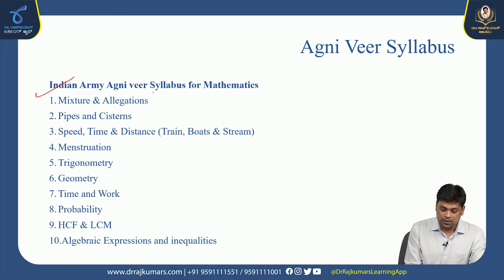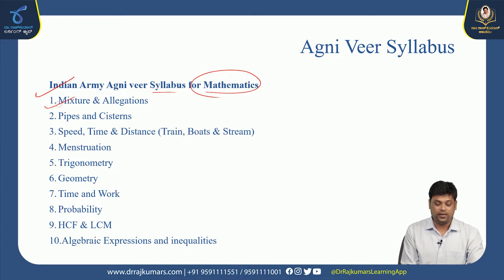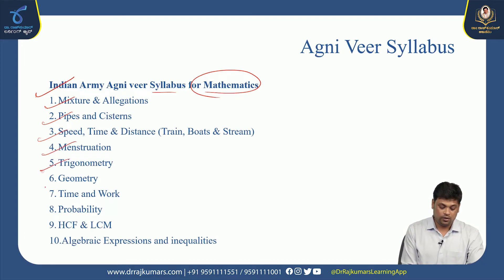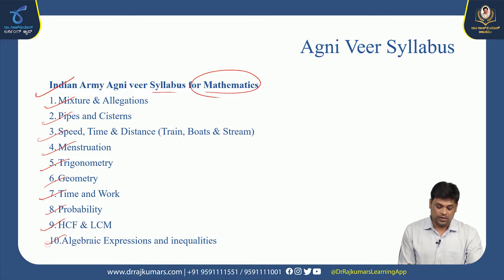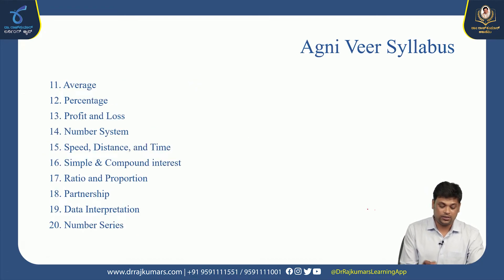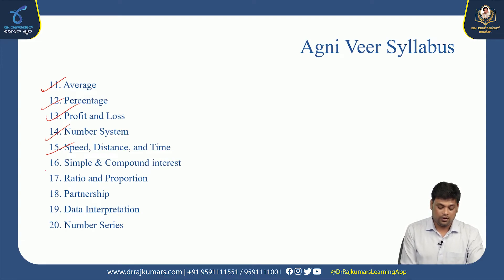Indian Army Agniveer syllabus for mathematics: mixture and allegations, pipes and cisterns, speed, time and distance, mensuration, trigonometry, geometry, time and work, probability, HCF and LCM, algebraic expressions and inequalities, average, percentage, profit and loss, number system, speed distance and time, simple and compound interest, ratio and proportion, partnership, data interpretation and number series.